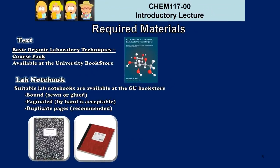You'll want to visit the university bookstore before we begin our work in lab to purchase a copy of the text for the course. In addition to the text, which contains your background readings, you'll also want a lab notebook for use in the lab. Your lab notebook should be bound with either sewn or glued pages — anything from a simple black-and-white composition book up to the more feature-packed notebooks available at the GU bookstore are acceptable.